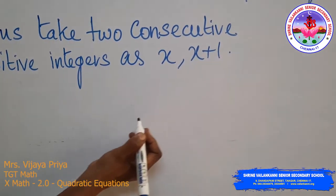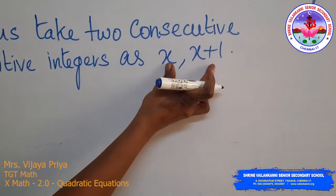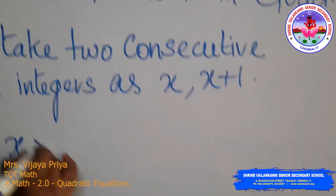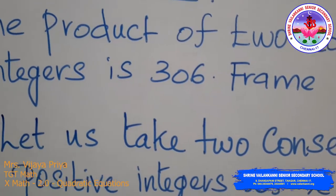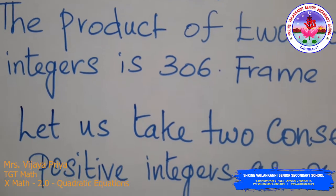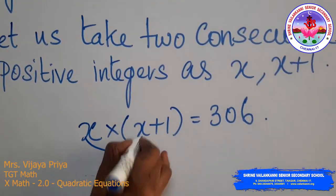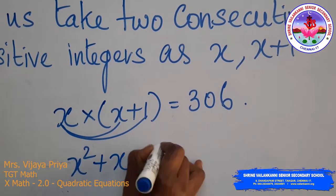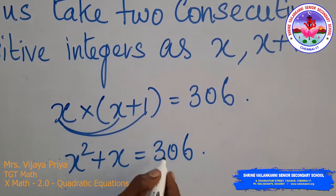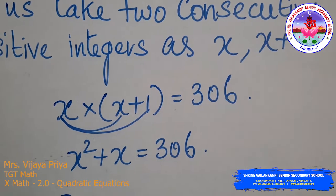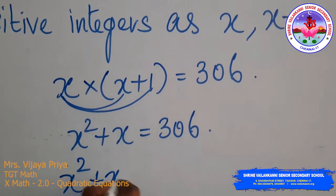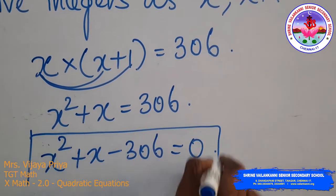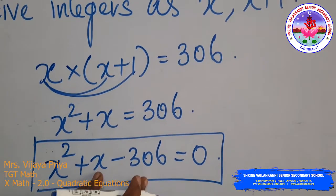Since the product of the two consecutive integers equals 306: x(x + 1) = 306, which gives x² + x = 306. Bringing 306 to the other side: x² + x − 306 = 0. This represents the situation in the form of a quadratic equation.